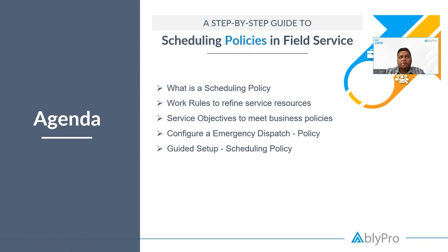Scheduling policies are a set of rules and objectives that guide the schedule optimizer in its decisions — basically how it schedules the service appointments. They're used to promote or de-emphasize factors like business priorities, travel times, and customer preferences. We'll look at those more in detail as we go along.